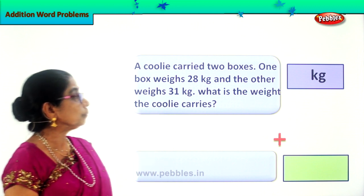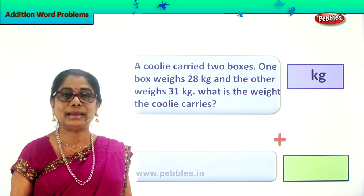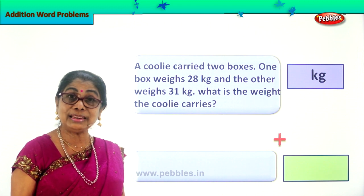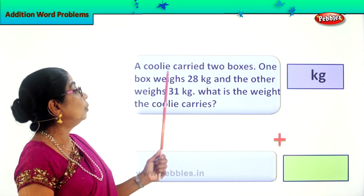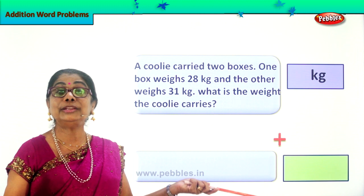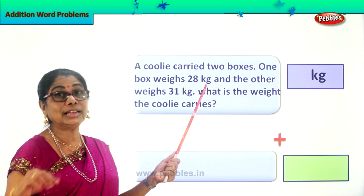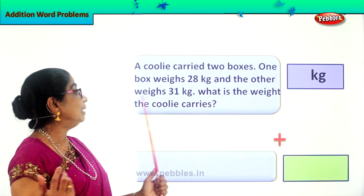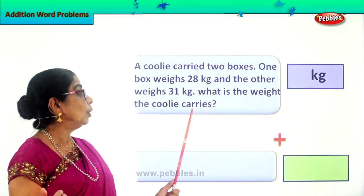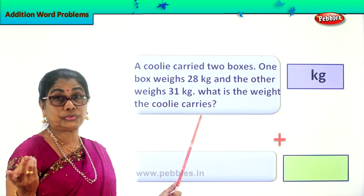You are given — let's read together. A coolie. Where do you find a coolie? At the bus stand, at the railway station. You find coolies in a red shirt — have you seen? At the railway station. A coolie carried two boxes, one on top of the other. A coolie carries two boxes. One box weighs 28 kg and the other weighs 31 kg. You are supposed to find the total weight of the two boxes.